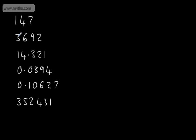If we look at 3,692, the first significant figure is in the thousands column. So if I wanted to round to one significant figure, I would round to the nearest 1,000. The second significant figure is in the hundreds column — rounding to two significant figures would be to the nearest 100. The third significant figure is in the tens column, so I'd be rounding to the nearest ten.